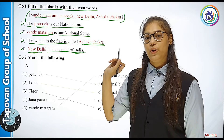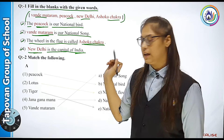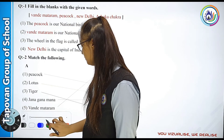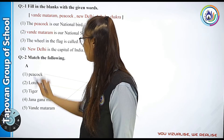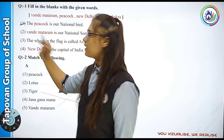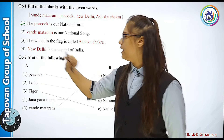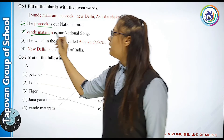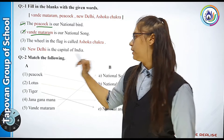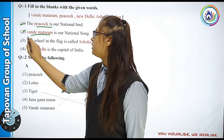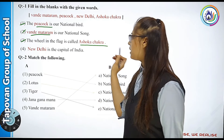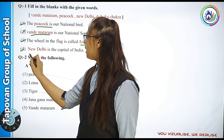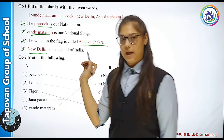Let us revise this once more. First answer: Peacock. Second: Vande Mataram. Third: Ashoka Chakra. Fourth: New Delhi.